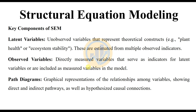The key components of structural equation modeling: latent variables are unobserved variables that represent theoretical constructs — examples include plant health or ecosystem stability. These are estimated from multiple observed variables, which are directly measured variables that serve as indicators for latent variables or are included as measured variables in the model.